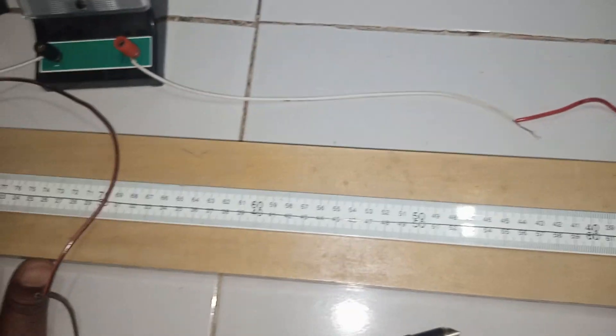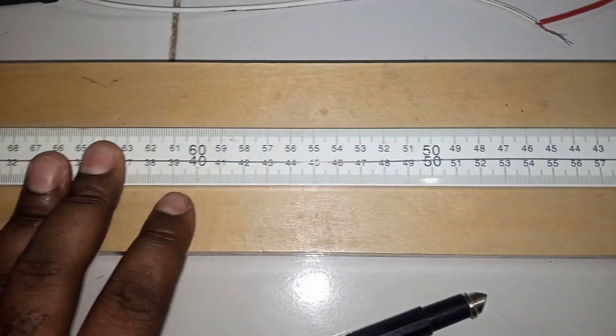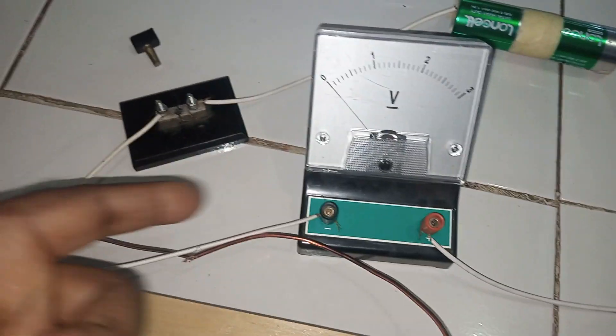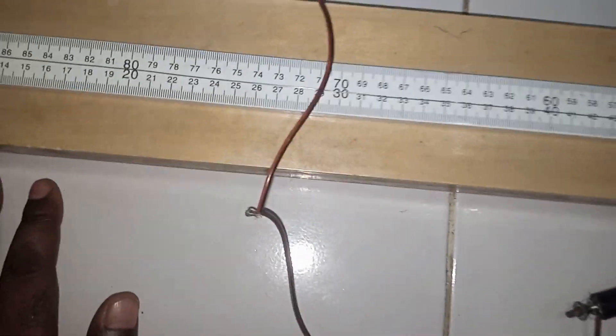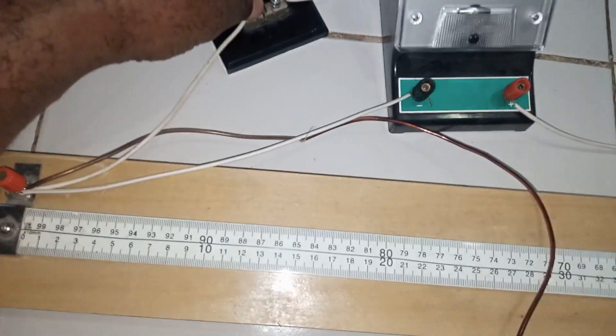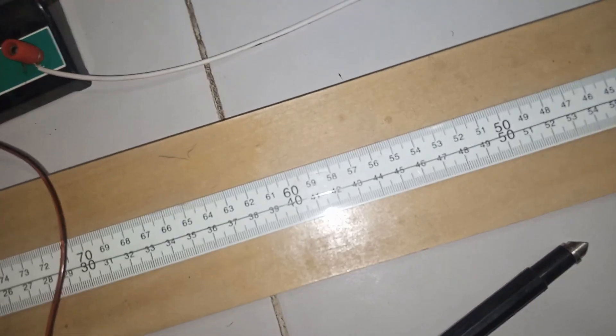So the next instruction would be that we should find the initial voltmeter reading and the initial ammeter reading when the jockey is not making contact with the potentiometer wire. You notice that our key is off. So it means that by the time I plug this, there should be a deflection both on the voltmeter and the ammeter, even though the jockey is not making contact with the potentiometer wire. So let us find out whether that is the case.